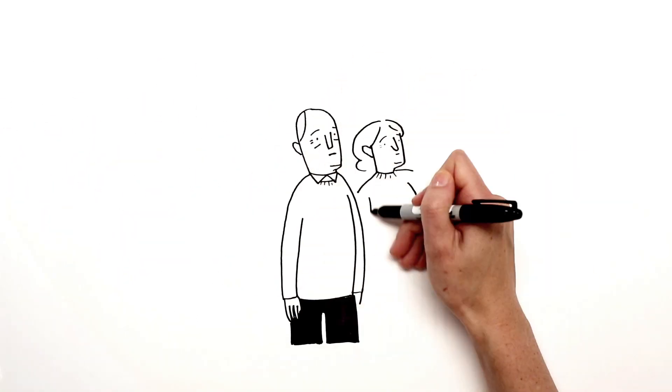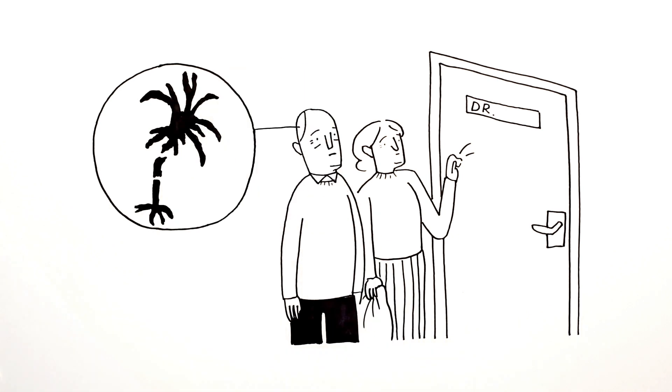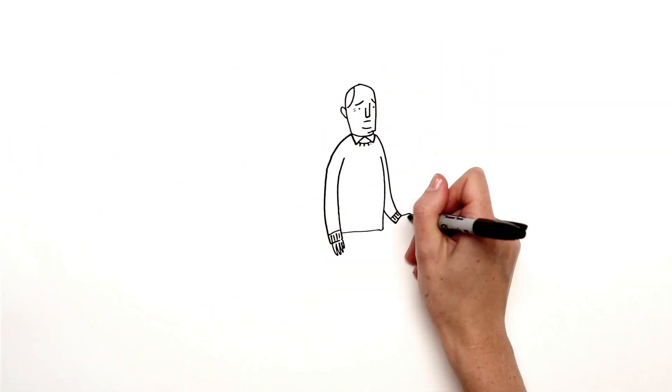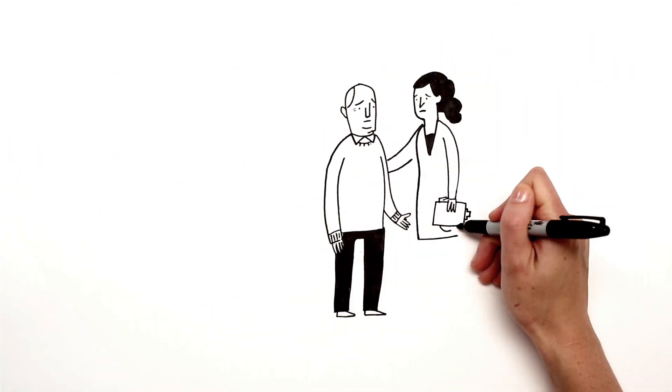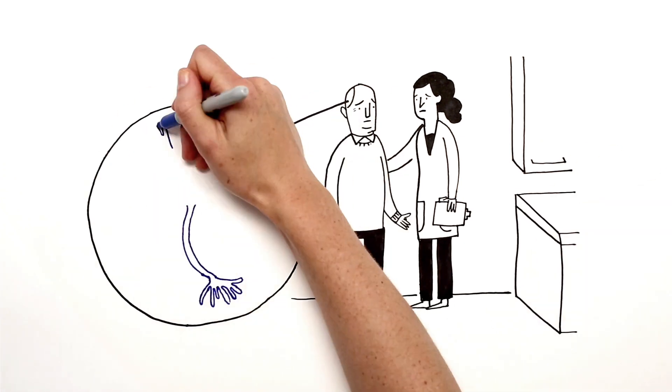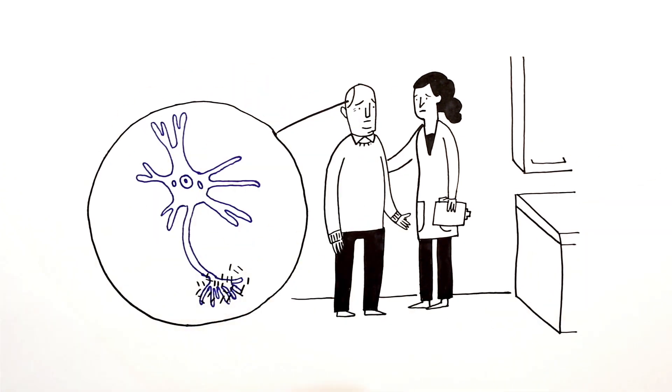It damages and destroys brain cells called neurons. The exact cause of Alzheimer's is unknown, but we know that it results in the build-up of amyloid plaques outside neurons and tau tangles inside neurons.